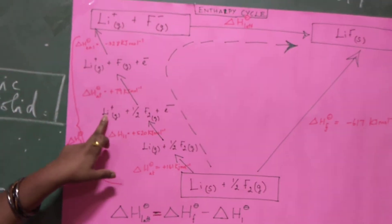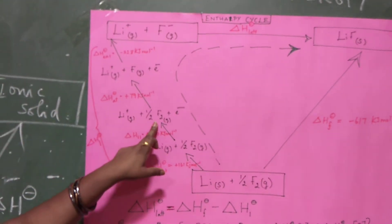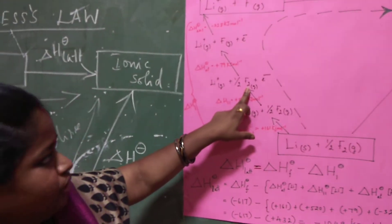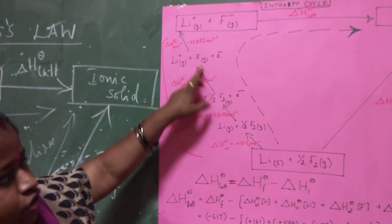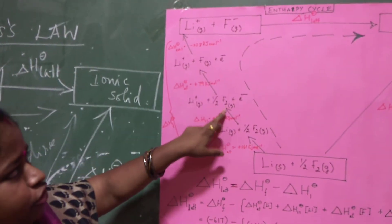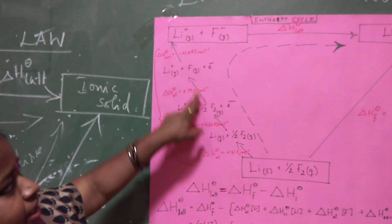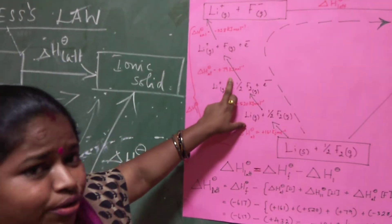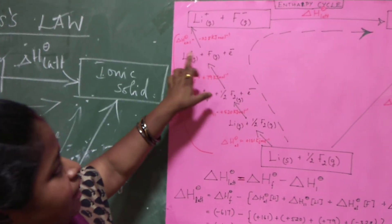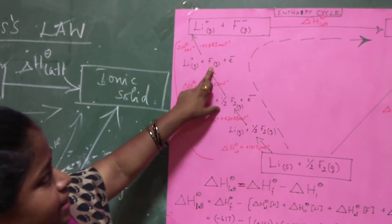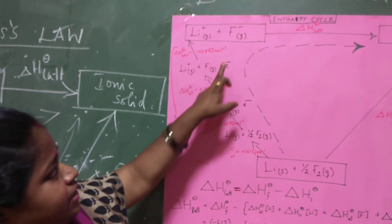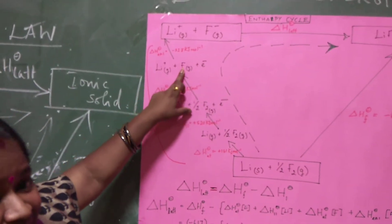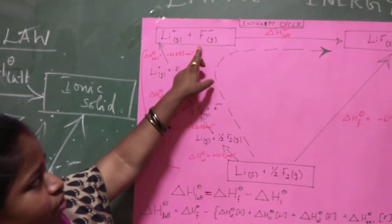Once you get the lithium ion, next you need to concentrate on the anion — fluoride. Half F₂ shows it is a gas molecule. From molecule to atom is also atomization — the atomization of fluorine also has a positive value, showing it is also an endothermic reaction. Once you get the fluorine gas atom, you convert the atom to ion. When fluorine gains an electron, it becomes F⁻ — this is called electron affinity.